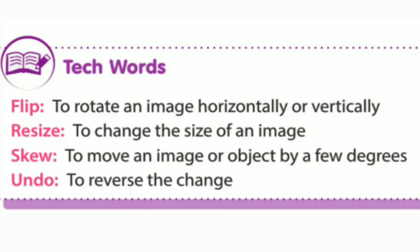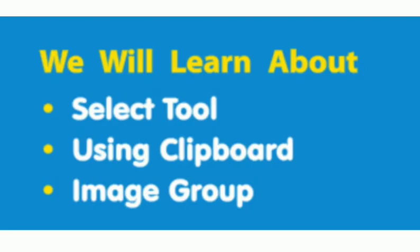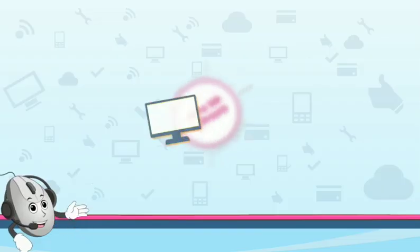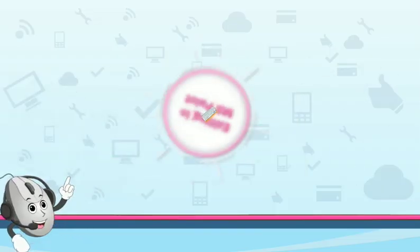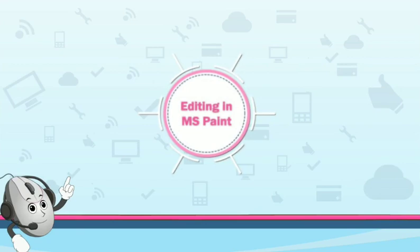In this chapter, we will learn about selection tools using the clipboard group and image group. We are going to learn in this chapter, so let's start chapter number 5: Editing in MS Paint.